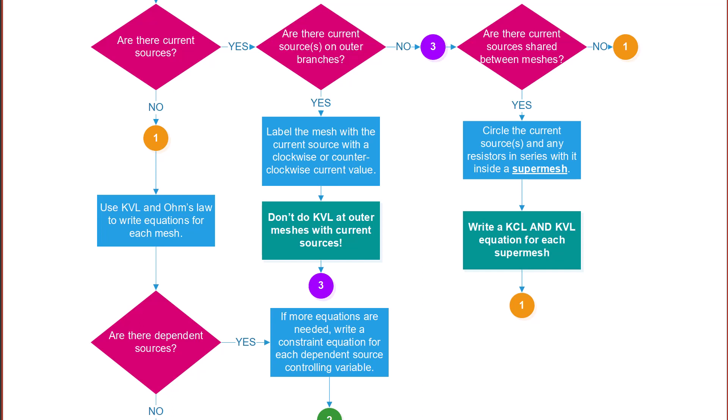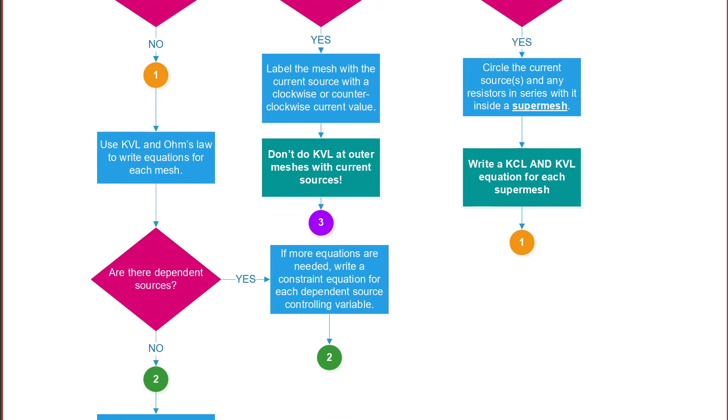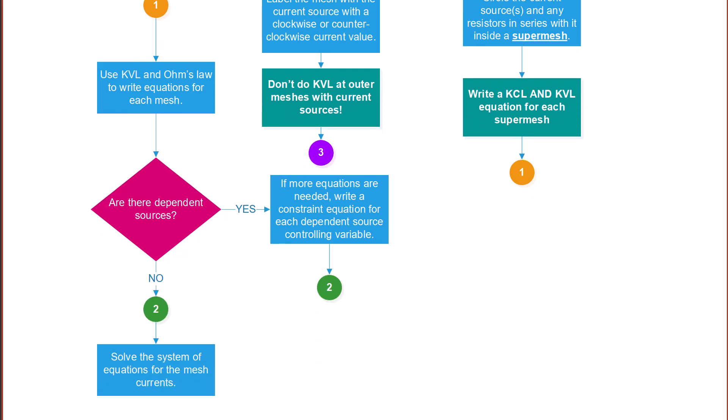The next thing you need to consider is are there dependent sources? If there are, then you will have a constraint equation as well, where you write the dependent source controlling variable in terms of the mesh currents. Finally, once you have all of the equations, you use your calculator to solve the system of equations as we talked about in the previous lecture.